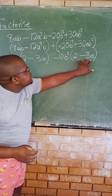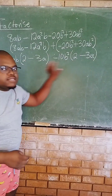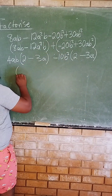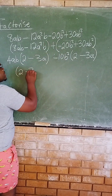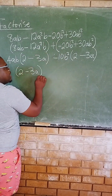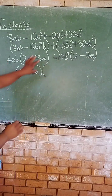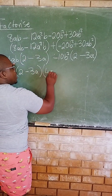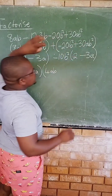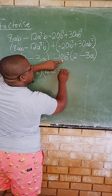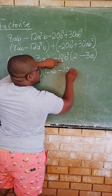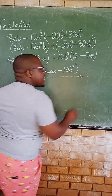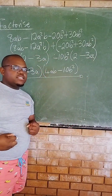Now we have this bracket and this bracket which are similar, and that is our common factor. So we take it out. We have 2 minus 3a. Then what are we left with? If I take this out I am left with 4ab, and if I take this out I am left with minus 10b squared. So this is how we factorize by grouping.